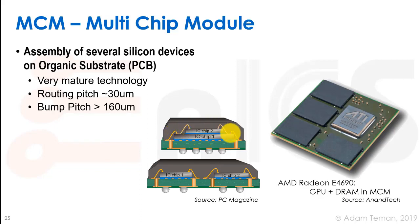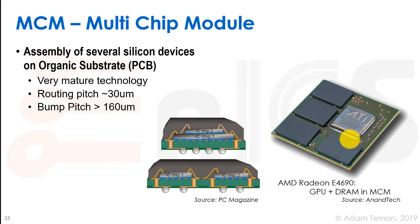We can also put two chips on top of each other, with possibly even shorter connections. Here we have a routing pitch of about 30 microns and a bump pitch of about 160 microns. An example of this is the AMD ATI Radeon, which has a bunch of these chips all in the same package — the graphics processor alongside what are probably DRAM modules.